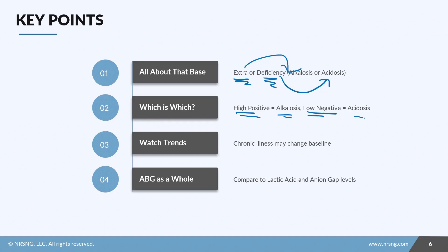Make sure that you're looking at the trends in your patient's lab values because chronic illness or some other interventions might actually change the patient's baseline. And as always, look at the entire ABG as a whole as well as comparing it to any of the other lab values to get a good big picture of what's actually going on with your patient and what your patient needs.